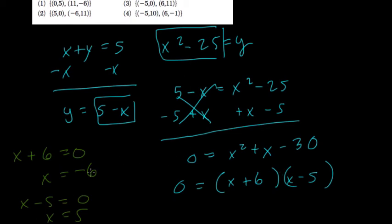And if we plug in those values into the line, which is easier to work with than the other one, we get the points. So our line, 5 minus x. So if x is negative 6, we have 5 minus negative 6, which is 11. So one of our points is negative 6, 11.